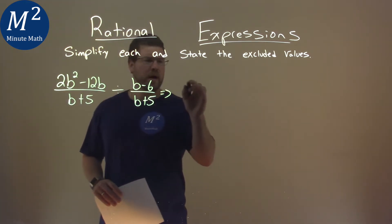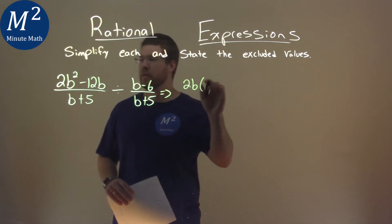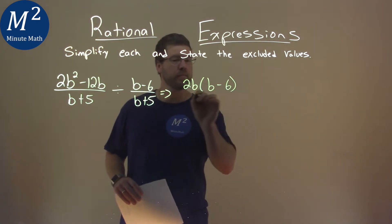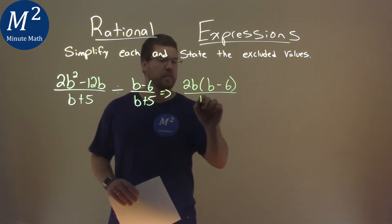If I take that, I pull out a 2b, I'm left with just 1b minus 6. Denominator stays the same, b plus 5.